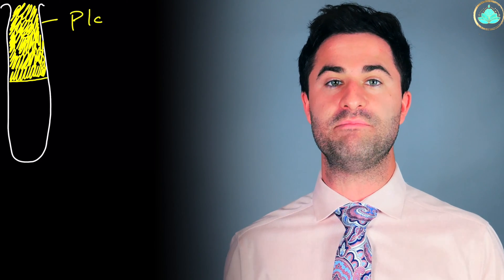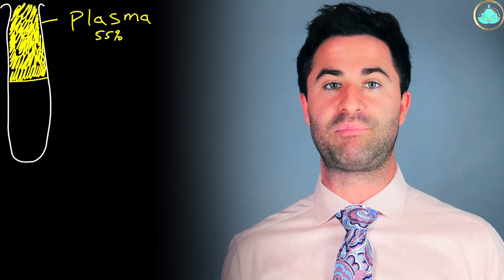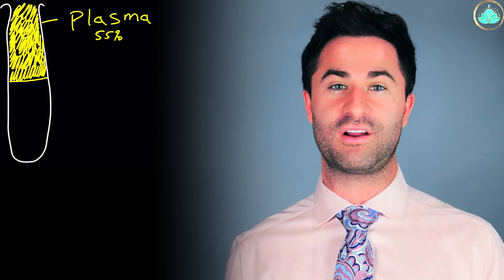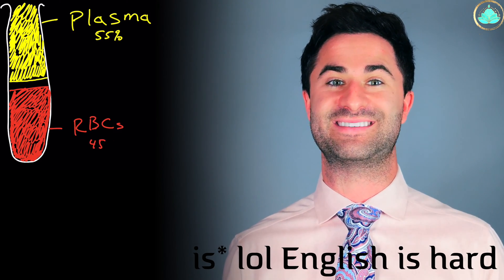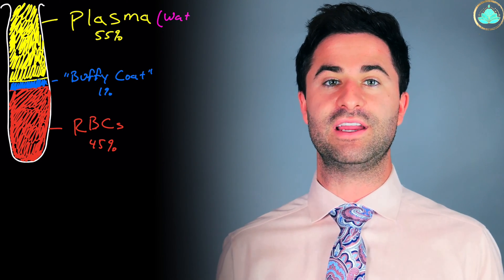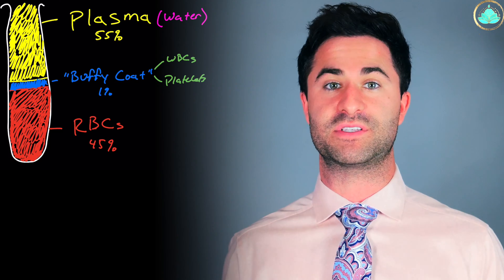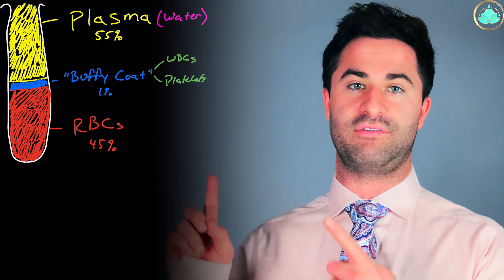A centrifuge is kind of like a really expensive carnival ride, and it'll take those tubes and spin them round and around at extraordinarily fast rates that would probably make any human being pass out. This allows the whole blood to be spun down into its components. Whole blood has three major components: the largest section is known as plasma, which is basically just water and some proteins; the second largest are your actual red blood cells; and then there's a small layer in the middle called the buffy coat, made up of white blood cells and platelets.